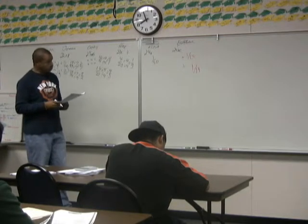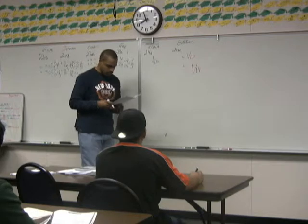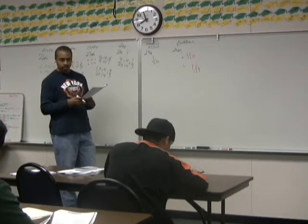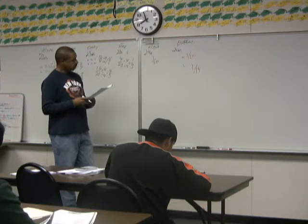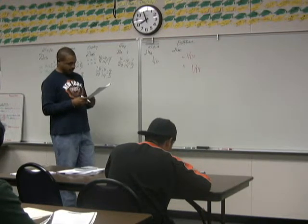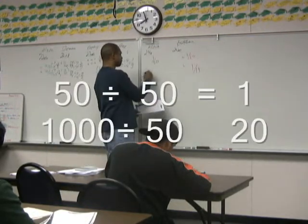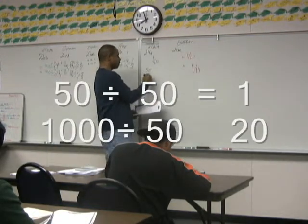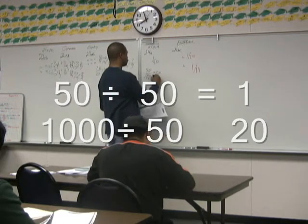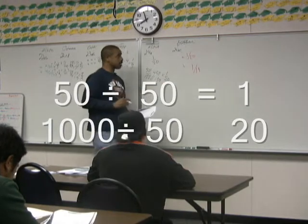Number 24A. A manufacturer produced 1,000 electric switches. Of these, 50 were found to have defects. 24A: what is the ratio of defective — 50 — to total switches — 1,000? Take a 50 out and you get 1 to 20. Good job, Alicia.